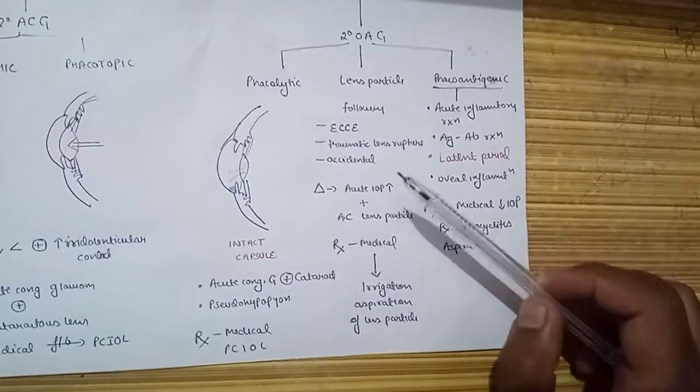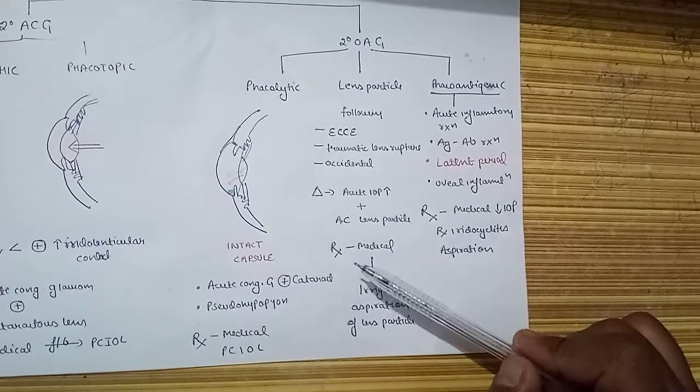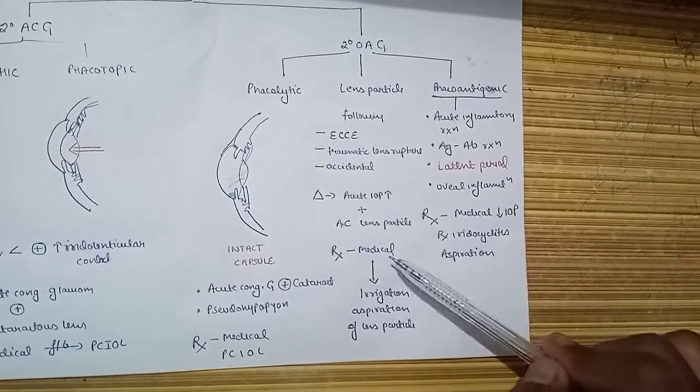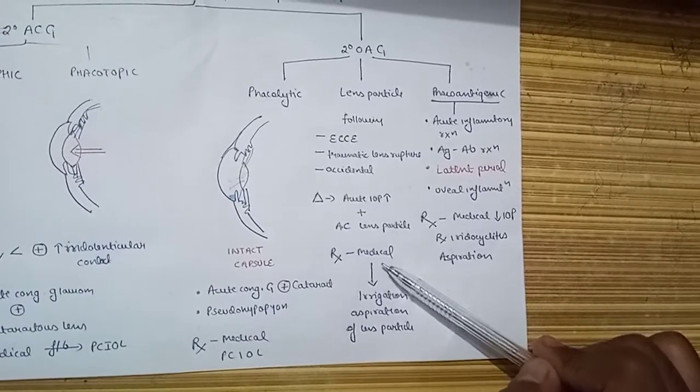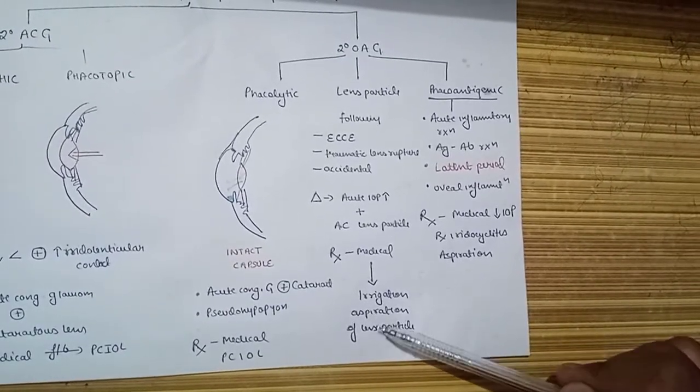This may result in acute IOP increase, and we may see lens particles in the anterior chamber. Treatment here is also medical management to control IOP, and later on we go for irrigation and aspiration of the lens particles from the chamber.